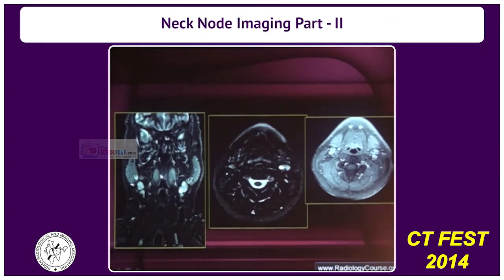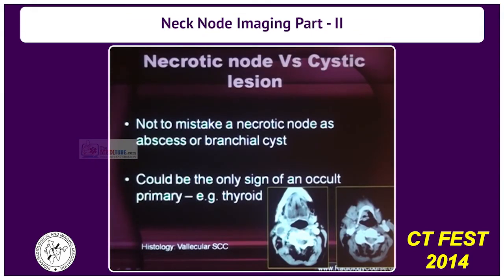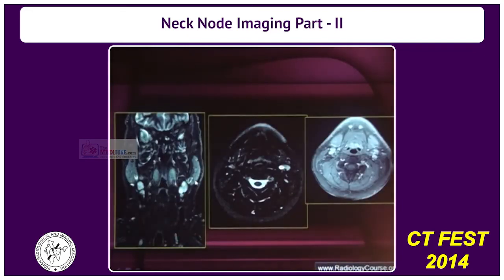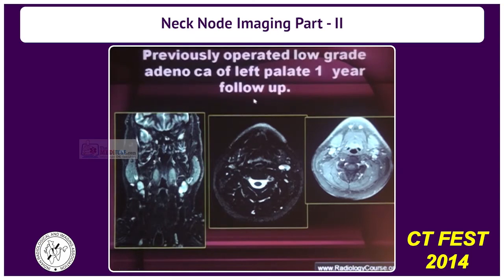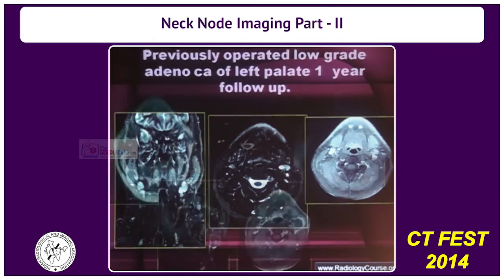Here is a patient who has a cystic node — this is a necrotic node and the patient has a valicular carcinoma. Another necrotic node in a patient previously operated for adenocarcinoma of the left palate, which on final histology turned out to be adenoid cystic carcinoma. You can see the cystic changes in this level 2 node.